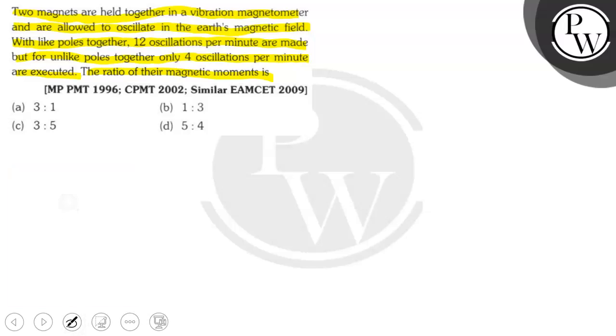So, let's solve it. If the sum and difference method of vibration magnetometer time periods are T1 and T2 respectively, T1 is T sum and T2 is T difference. So, our magnetic moment ratio is T1 squared plus T2 squared by T2 squared minus T1 squared. Now, let's see here.